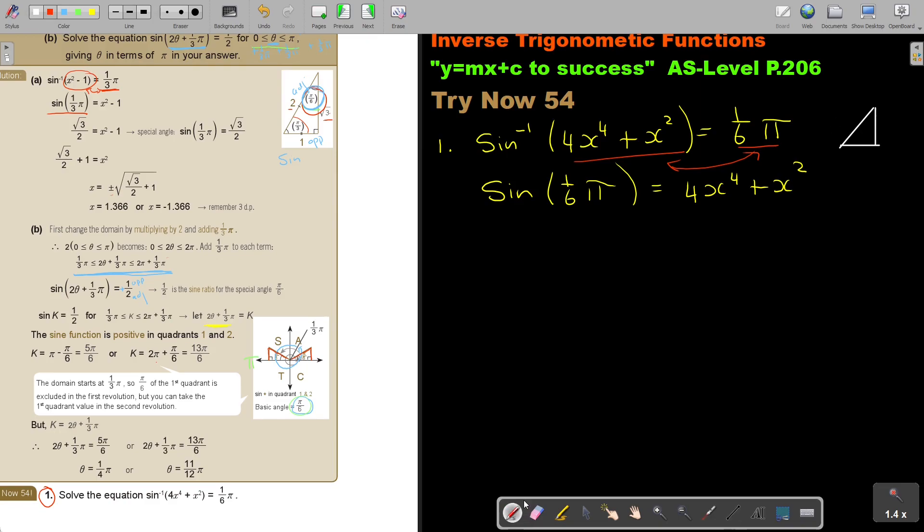This is this one. This is 2, this is 1, this is square root 3. This will be pi over 6 because this will be pi over 3. If I look at pi over 6, sin is opposite over adjacent, so in this place I can go and put a half. I have it. And then I have 4x to the 4th plus x squared. Now I can first bring it over.